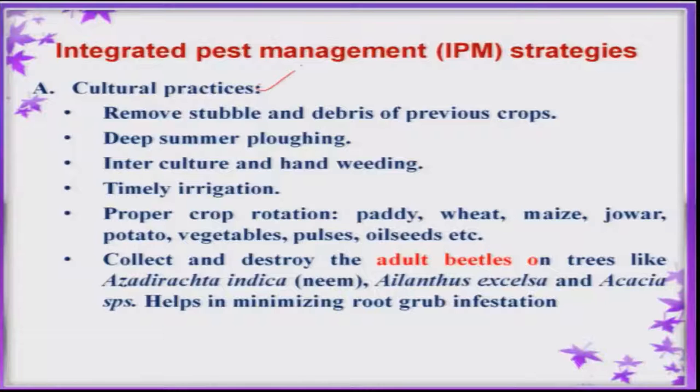In integrated pest management, cultural practices are very important in the sugarcane ecosystem. Removal of the previous crop stubbles, deep plowing, inter-cultural operations, and timely irrigation are some of the cultural practices that help minimize pest incidence and increase natural enemies, including beneficial fungi.